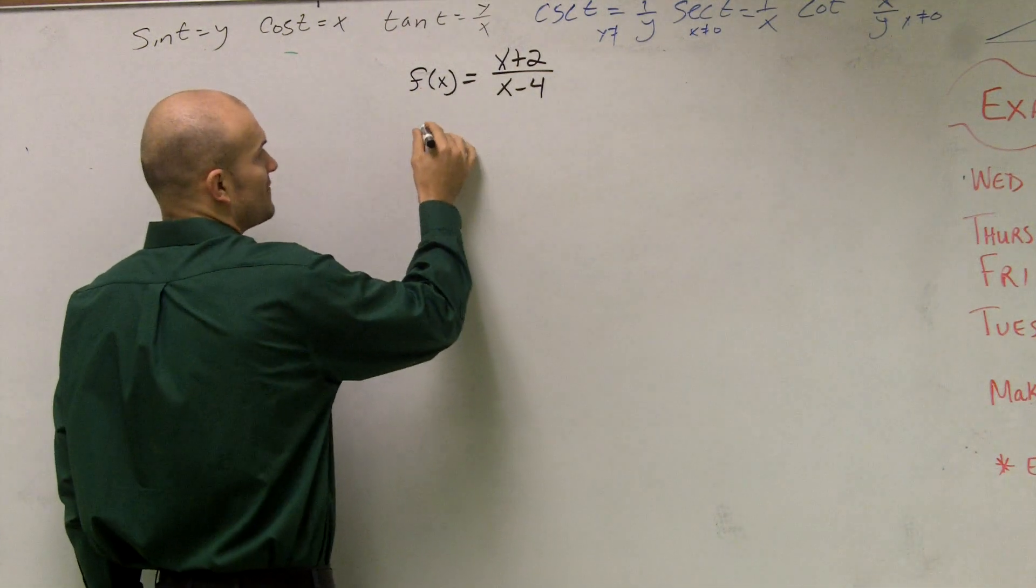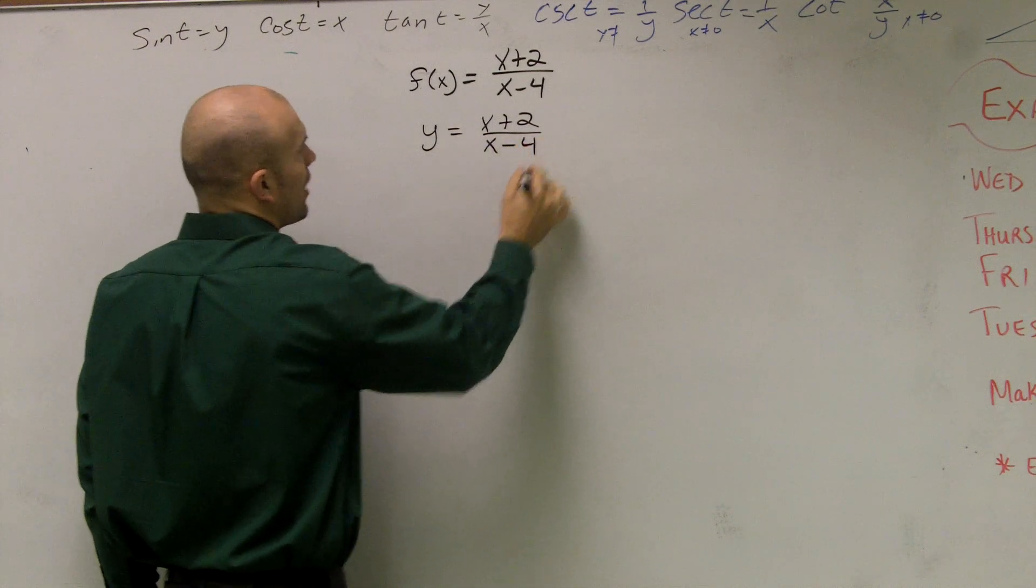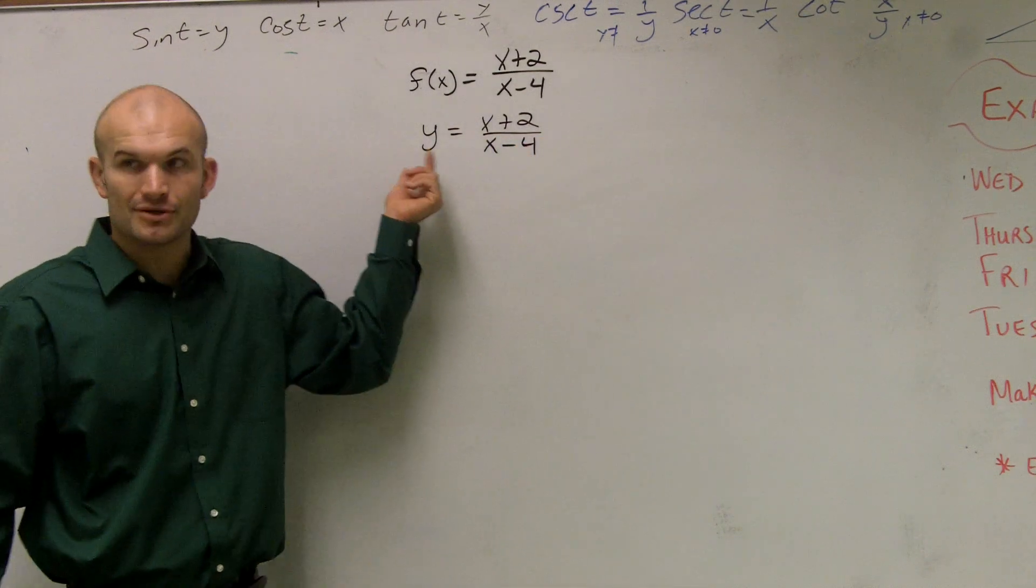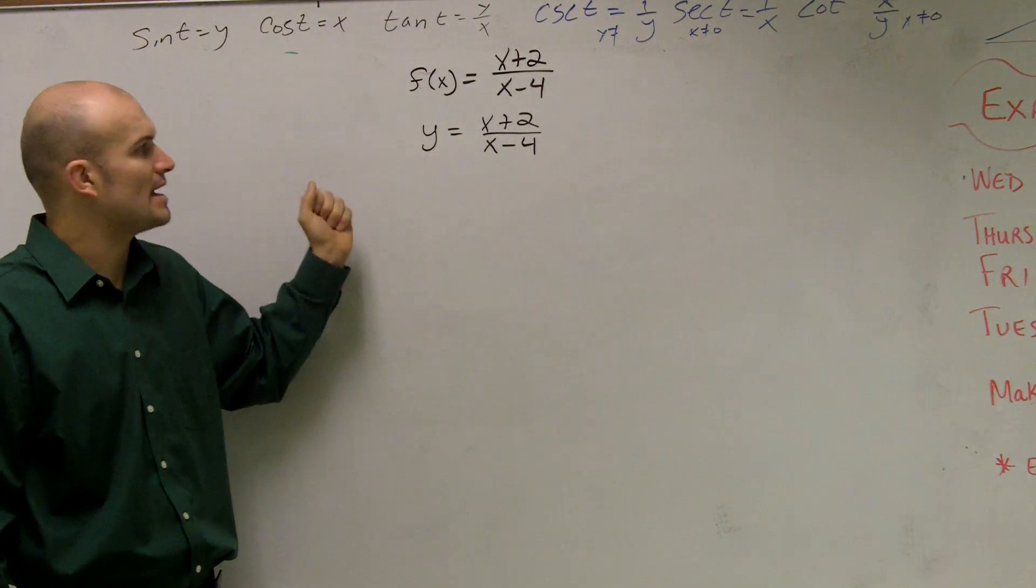The first part is to interchange f of x with y. And that just helps us do our math. Remember that f of x and y both represent our output value. So they're really not changing anything. It's just going to make it a little bit easier to do the math.